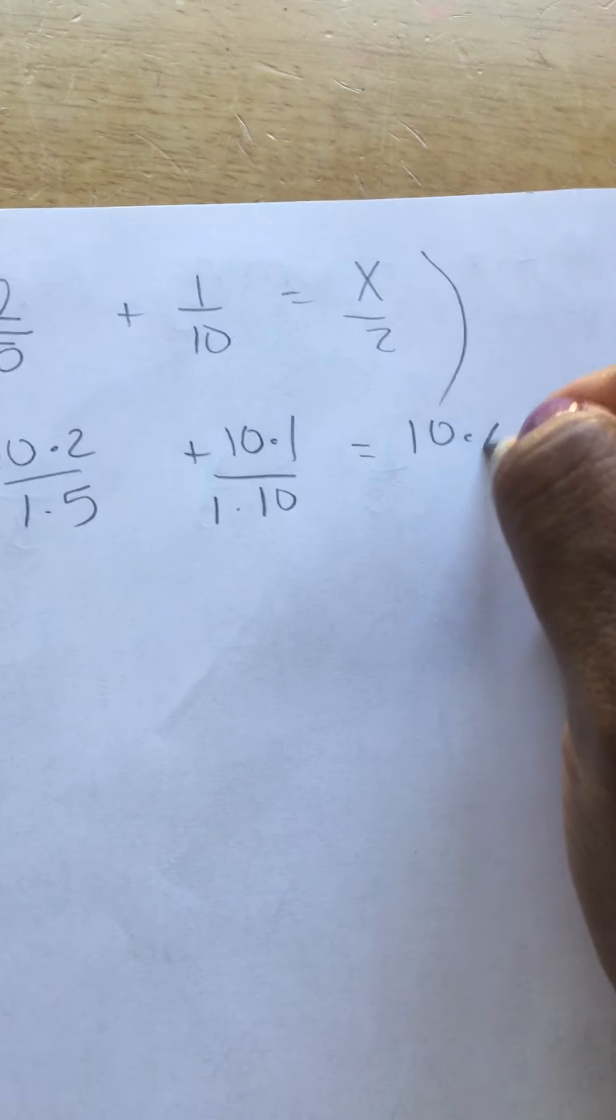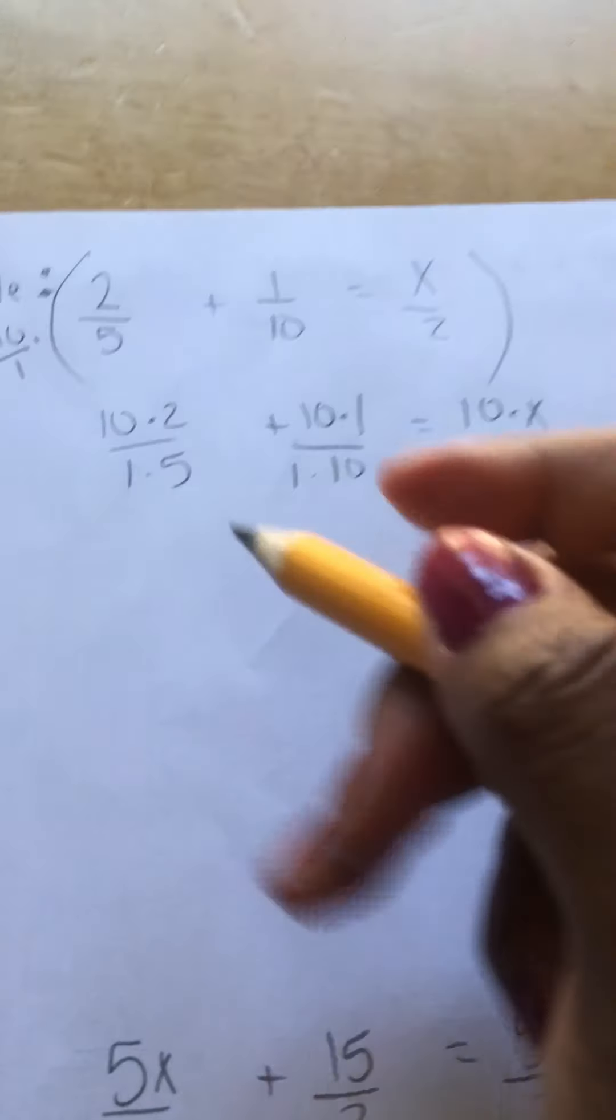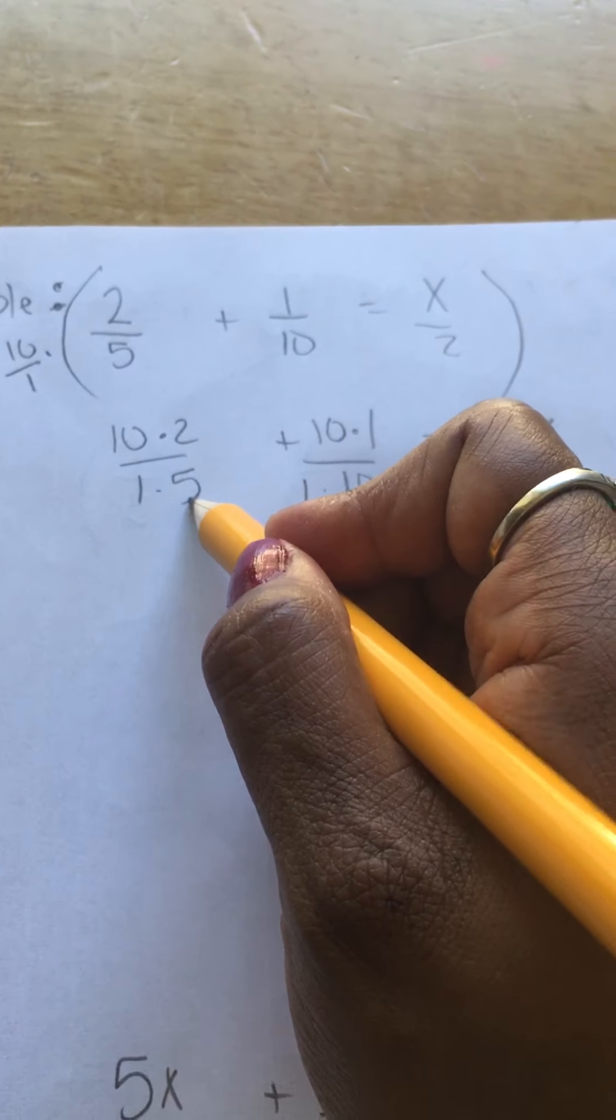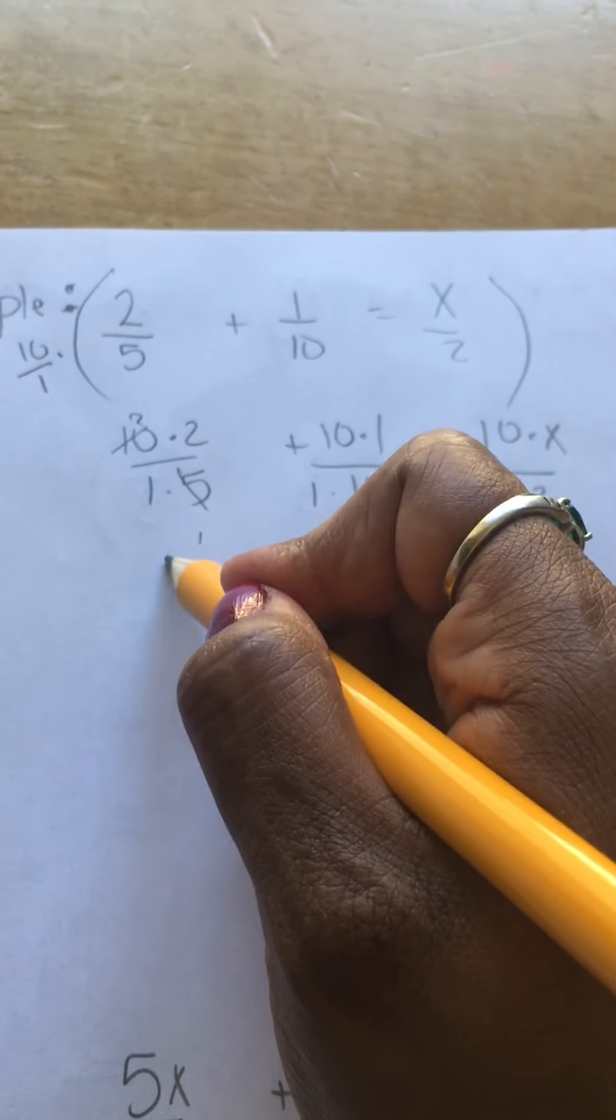Equals 10 times x over 1 times 2. Alright, 10 divided by 5, and I'm going to do that first. That becomes a 1 and that becomes a 2. So 2 times 2 is 4.